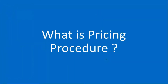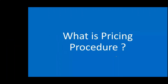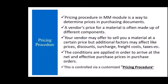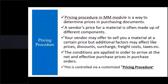First we will understand what is pricing procedure. Pricing procedure in MM module is a way to determine prices in purchasing top costs. So whenever you create a purchase order, the system will determine the price — you need the gross price and you need the net price. So how to arrive at those prices, how the system automatically determines the prices — that is done through this pricing procedure.